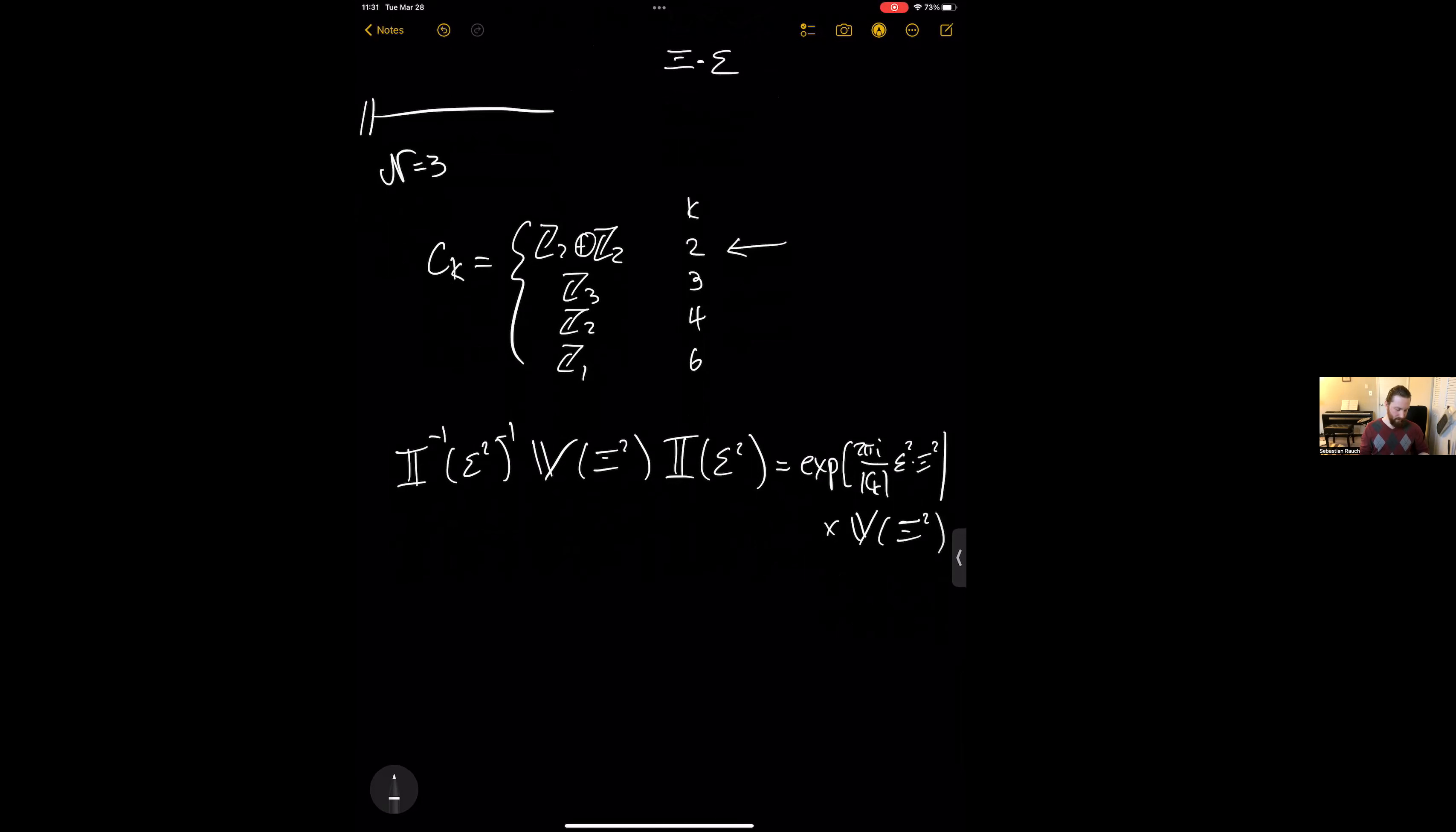And so from this commutation relation we can read off also the number of global structures. And so we see that for K equals three and four, because the string and five brane don't commute, we end up with three theories which corresponds to either having a lone string, a lone five brane, or a bound state. And then in the case of the K equals six theory there's actually only the one theory because the string and the five brane commute with each other.